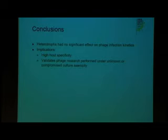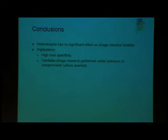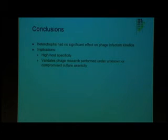There was no significant difference between the heterotroph-inoculated cultures and the axenic cultures in the flow cytometry results either. This led me to conclude overall that the heterotrophs had no significant effect on the infection kinetics. These results suggested that the PSSP7 phage had very high host specificity, selectively attacking the Prochlorococcus cells as opposed to the heterotrophs. This research also validates the previous research done in the lab under unknown or possibly compromised axenic conditions.